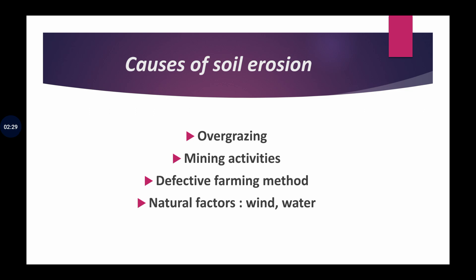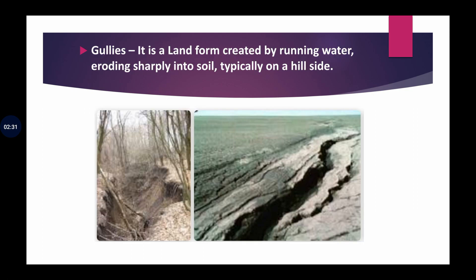Now we discuss about two-three terms related to this chapter. These terms are gullies, ravines, and sheet erosion. First is gullies. Gullies are deep channels developed in clay soil due to running water. Bhehtay huye paani ke kaaran jo deep channels ban jaate hain, unhe gullies kehte hain. As you can see in this picture, the deep channels formed are gullies.